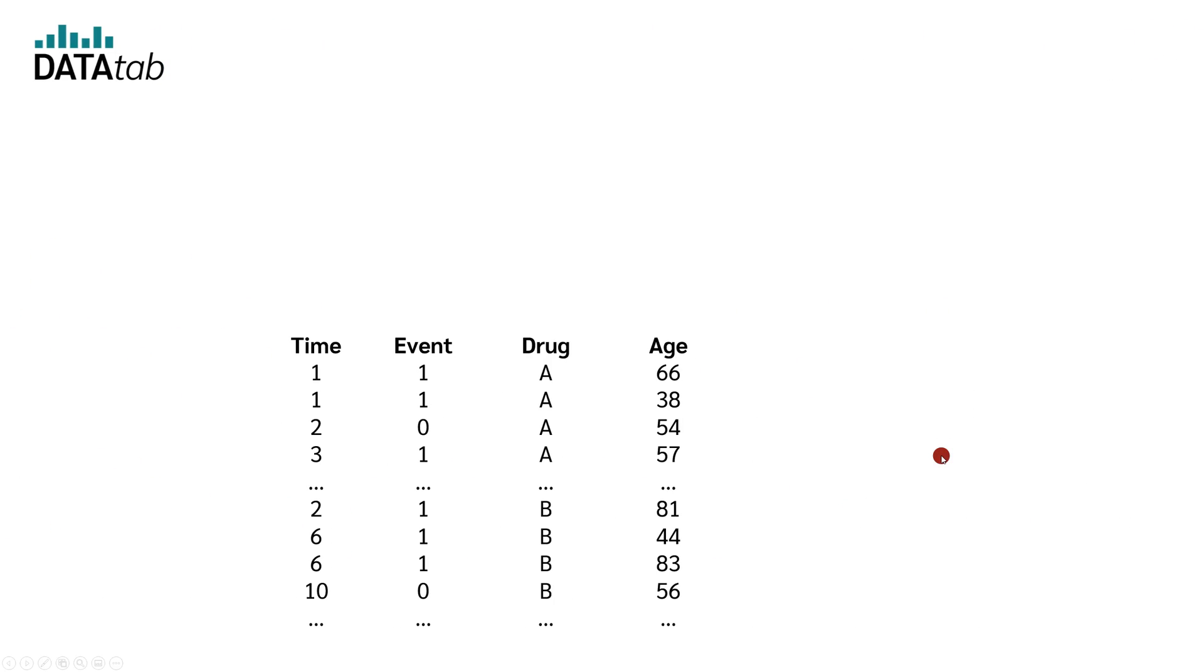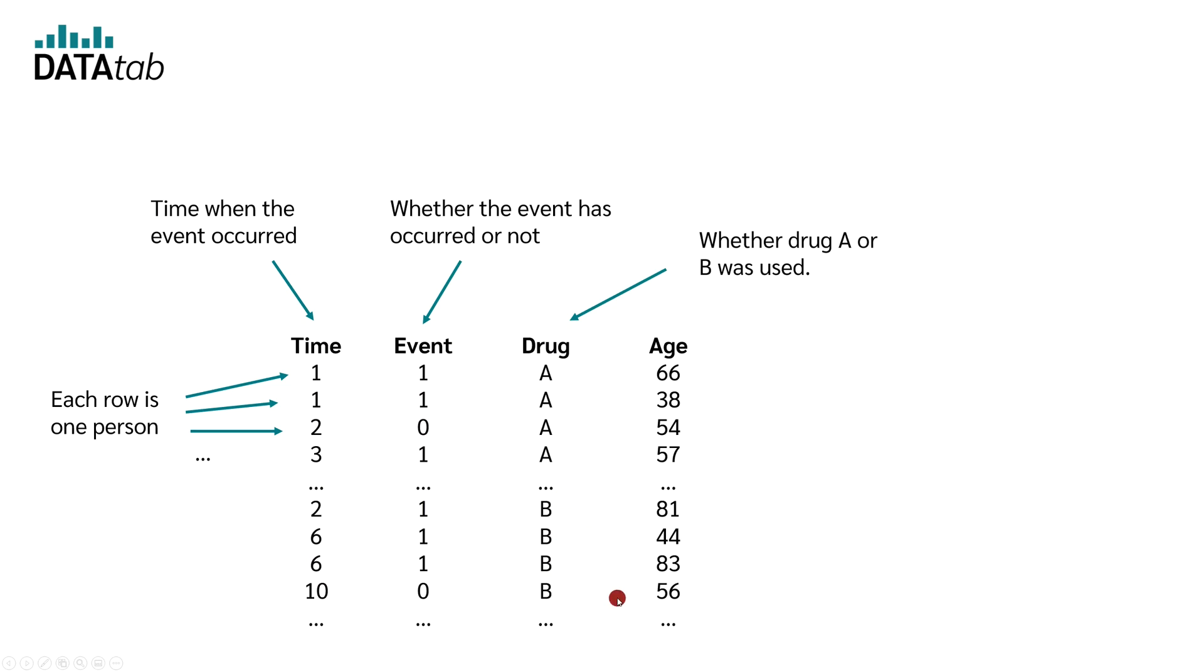Let's look at an example. Let's assume this is our data we want to evaluate. Each row describes a patient with the corresponding disease. The time indicates when the event or death occurred. Here we have the data which drug was used and here we have the age of the people.